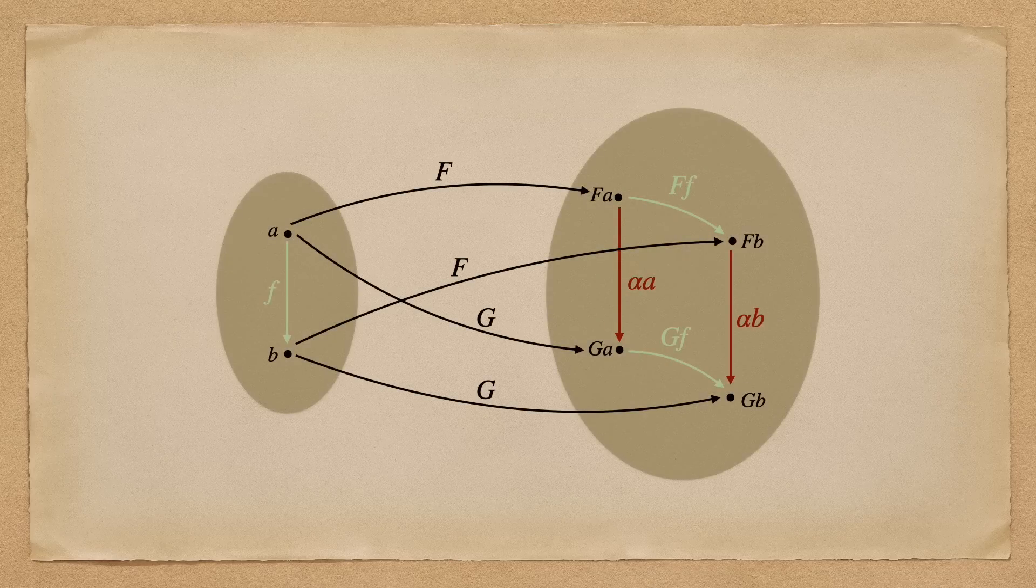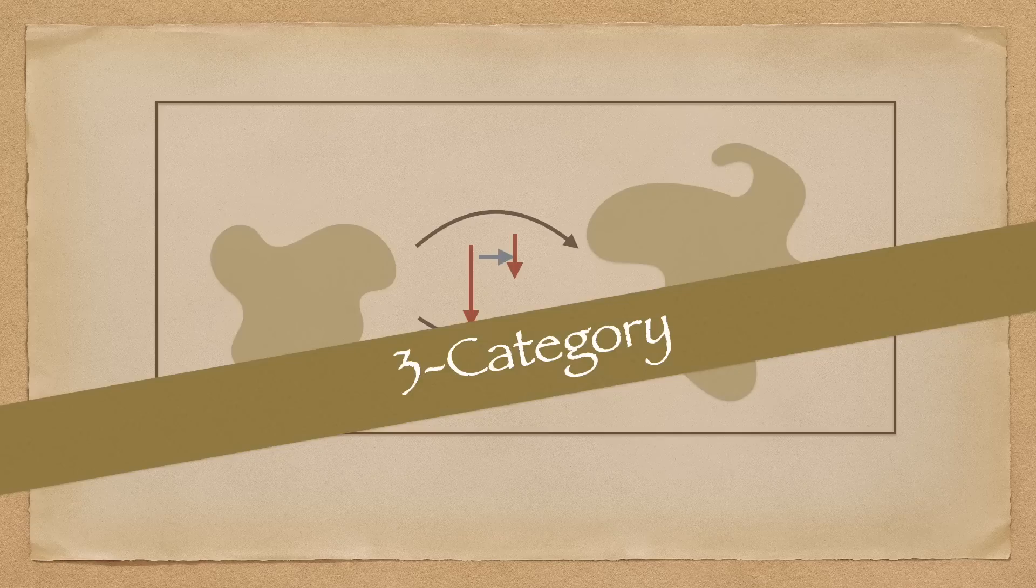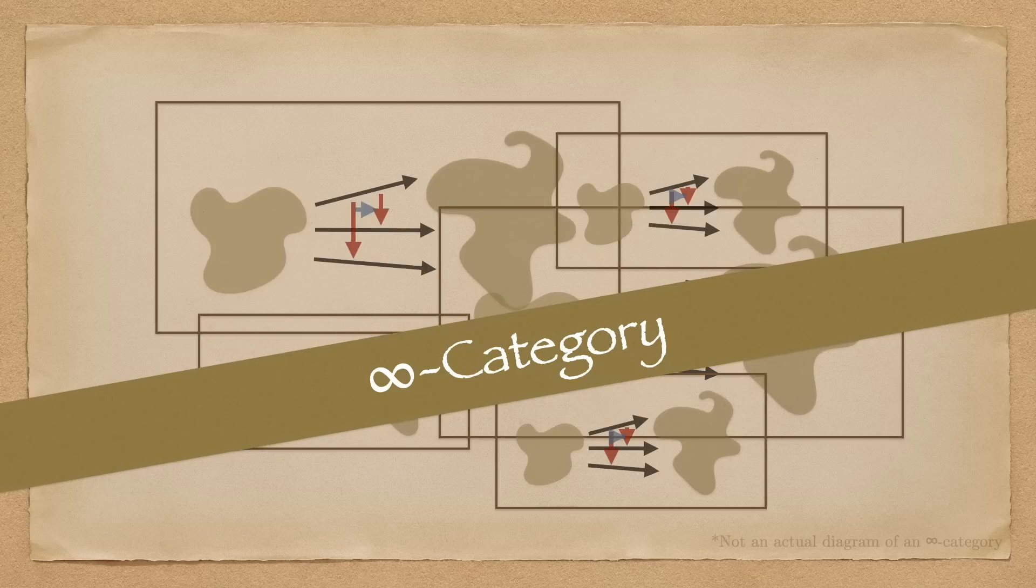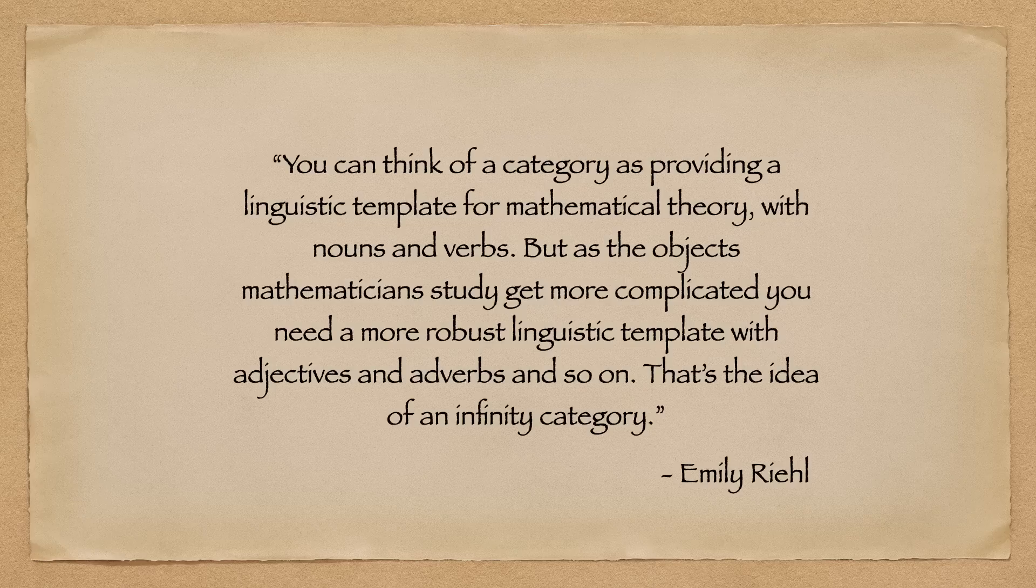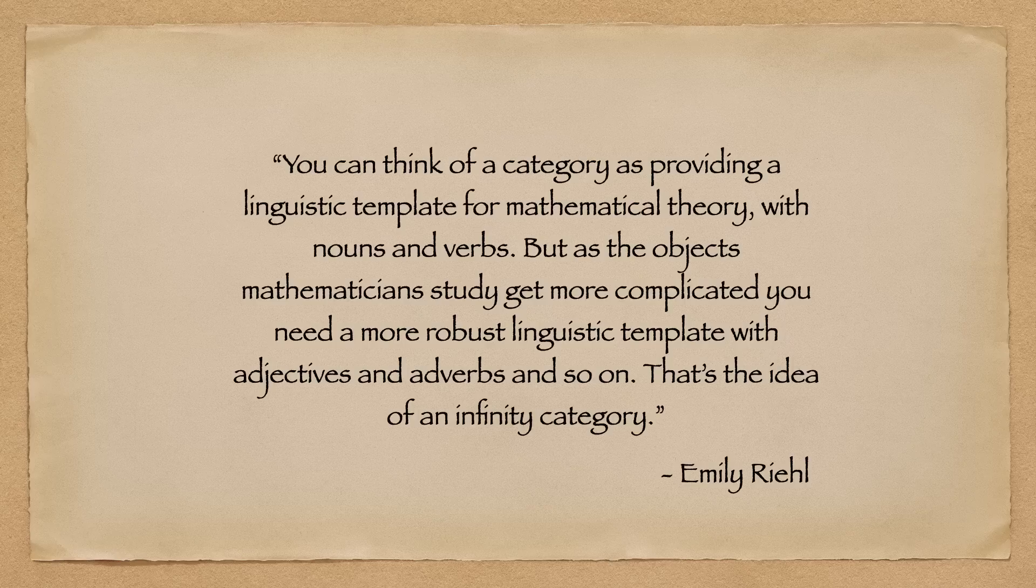Of course, we could generalize these even further to three category, four category, or even infinity category. In category theorist Emily Rieu's words, you can think of a category as providing a linguistic template for mathematical theory, with nouns and verbs. But as the objects mathematician study get more complicated, you need a more robust linguistic template with adjectives and adverbs and so on.